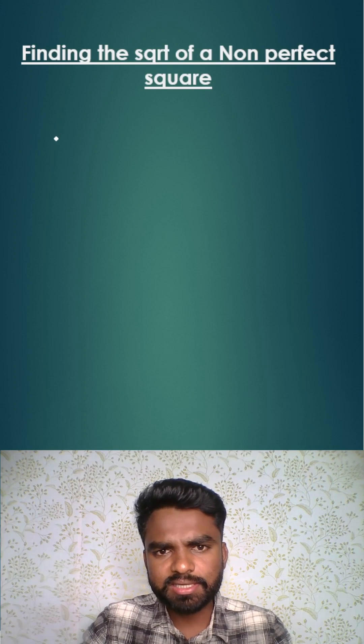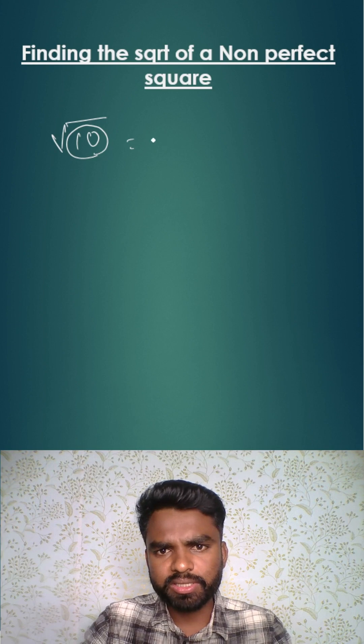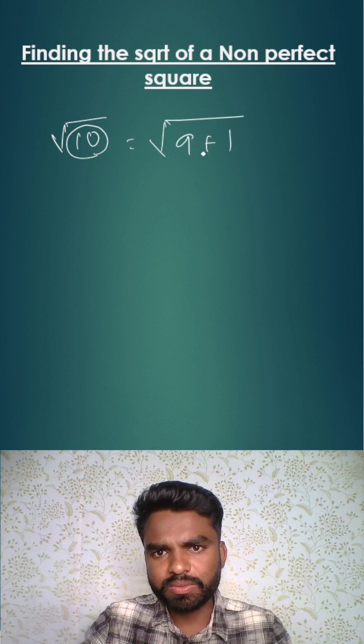Now let's consider another example, square root of 10. What is the nearest perfect square to 10? It's 9. So I'll be writing 10 as 9 plus 1.